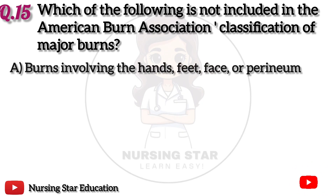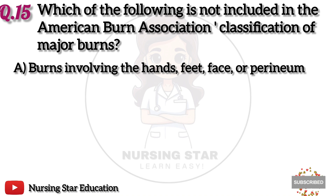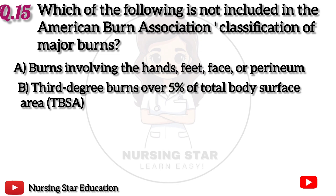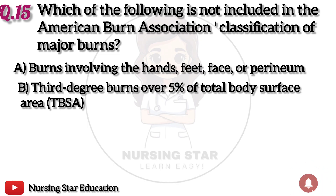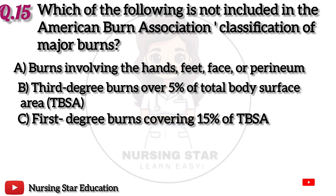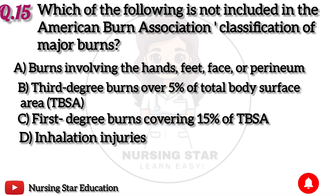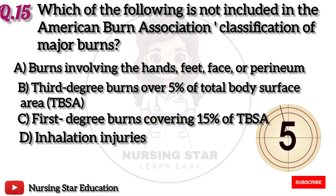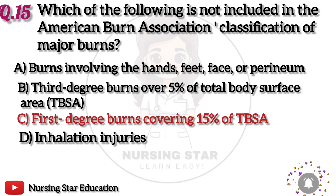Question 15: Which of the following is not included in the American Burn Association's classification of major burns? Option A: Burns involving the hands, feet, face or perineum. B: Third degree burns over 5% of TBSA. C: First degree burns covering 15% of TBSA. D: Inhalation injuries. The correct answer is C: First degree burns covering 15% of TBSA.